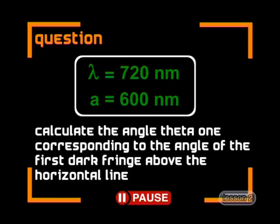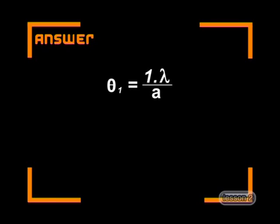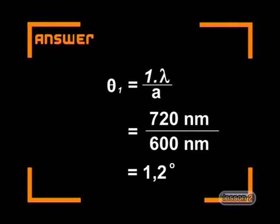See if you can use this equation to solve the following problem. The wavelength of red light is 720 nanometers. If this light is shone onto a slit that has a width of 600 nanometers, calculate the angle theta1 corresponding to the first dark fringe above the horizontal line. Using the equation theta1 equals plus 1 times lambda divided by a, and inserting the given values, we find that the angle is 1.2 degrees.